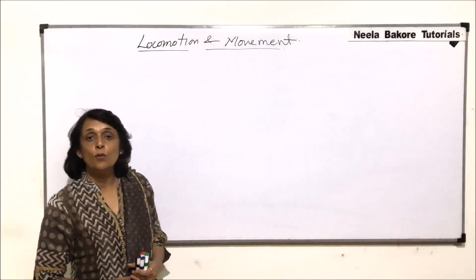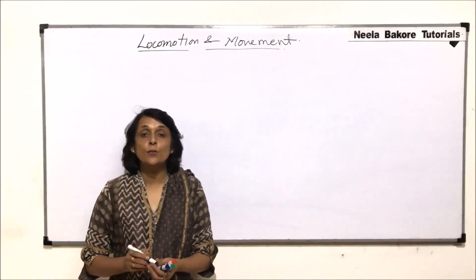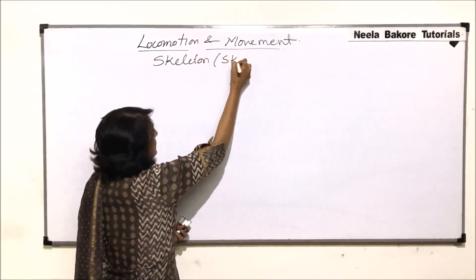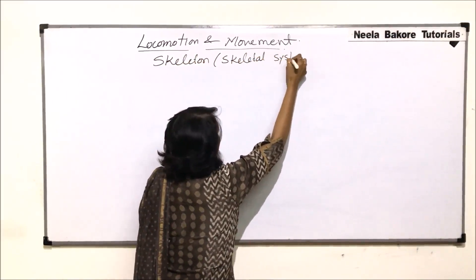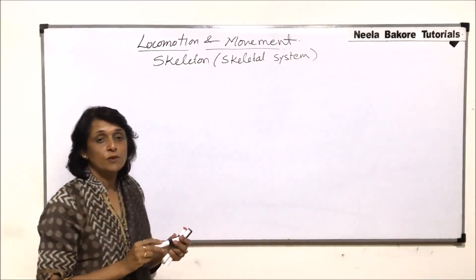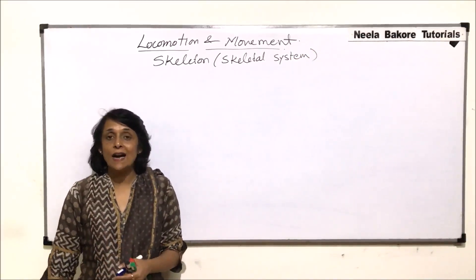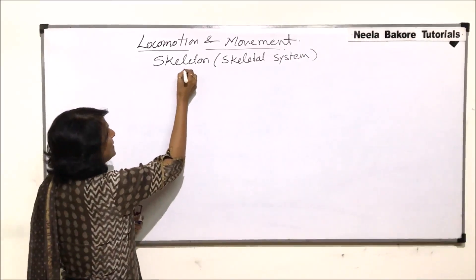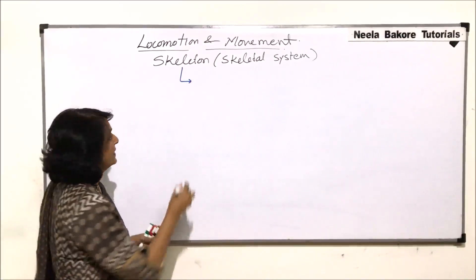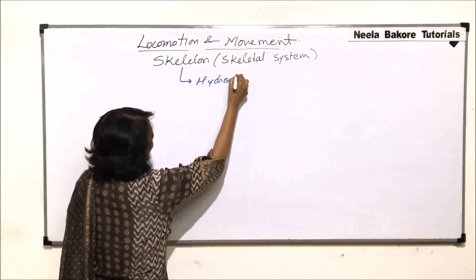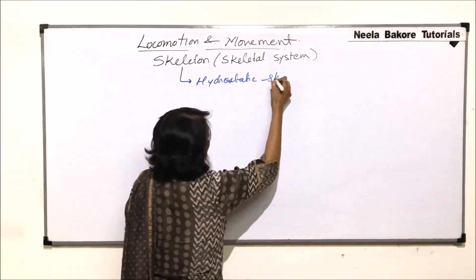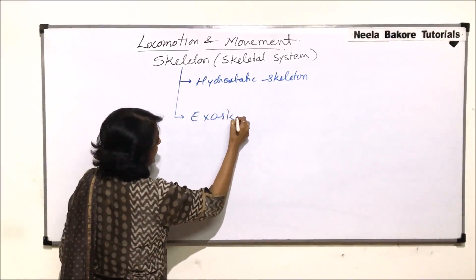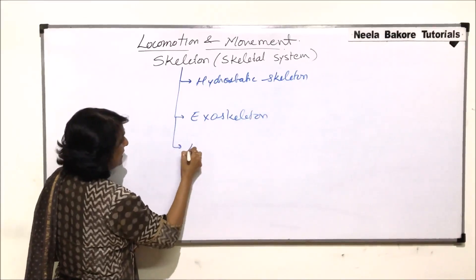In this chapter on locomotion and movement, we will now start with the skeleton or skeletal system. Before we discuss the system of bones in higher animals including us, we will first look at different types of skeleton. When we use the word skeleton, we normally classify them into three categories: hydrostatic skeleton, exoskeleton, and endoskeleton.